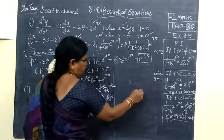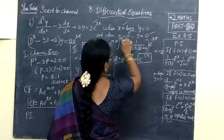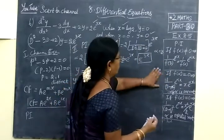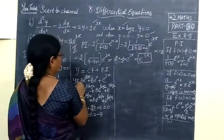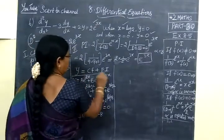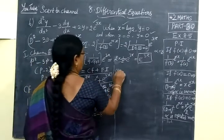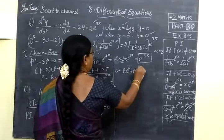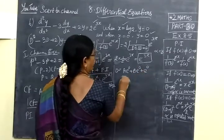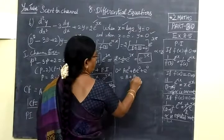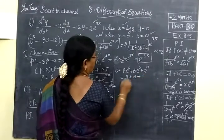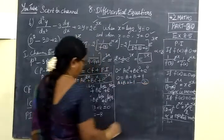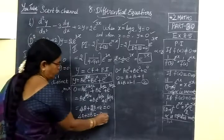Next condition we are substituting x = 0, y = 0. So in the solution, 0 = A times e^0 plus B times e^0 plus e^0. Anything e^0 = 1. So A plus B plus 1 = 0. So A plus B = -1 is equation 2.